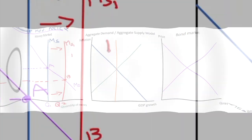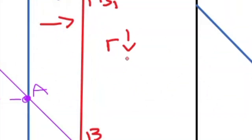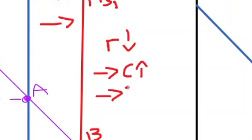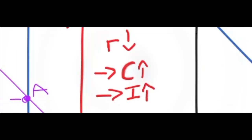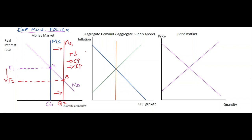Because of the reduction in the real interest rate, that has a positive impact on two real variables: consumption, which tends to go up, and investment by firms, which also tends to increase. As these increase they will have an impact on aggregate demand, so we move on to the second diagram to see the impact on aggregate demand.